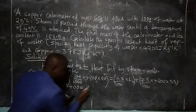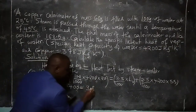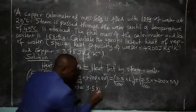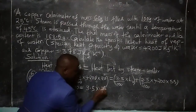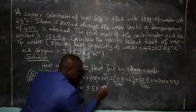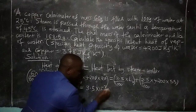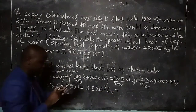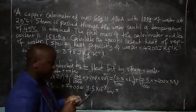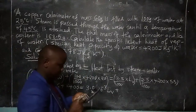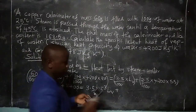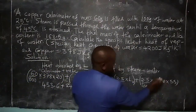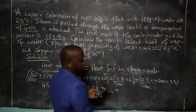On the right-hand side: 3.5 times 10 to the power negative 3, multiplied by L, plus 3.5 grams — with the zeros canceling — this becomes 4.2 times the temperature difference.